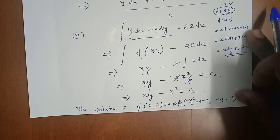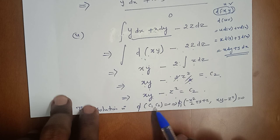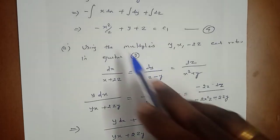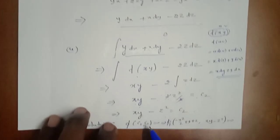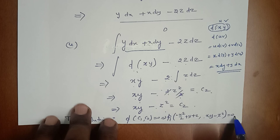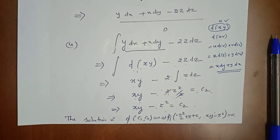The final solution of the Lagrange's equation is φ(c₁, c₂) = 0, where c₁ = −x²/2 + y + z and c₂ = xy − z². These two are the solutions of the Lagrange's linear equation. End of problem.